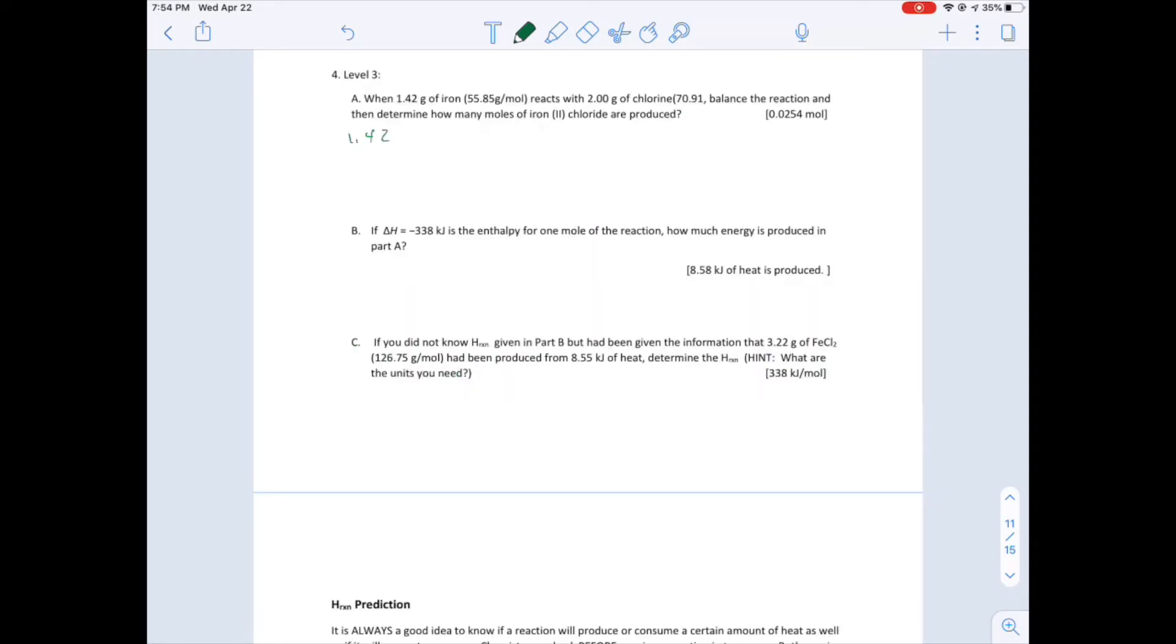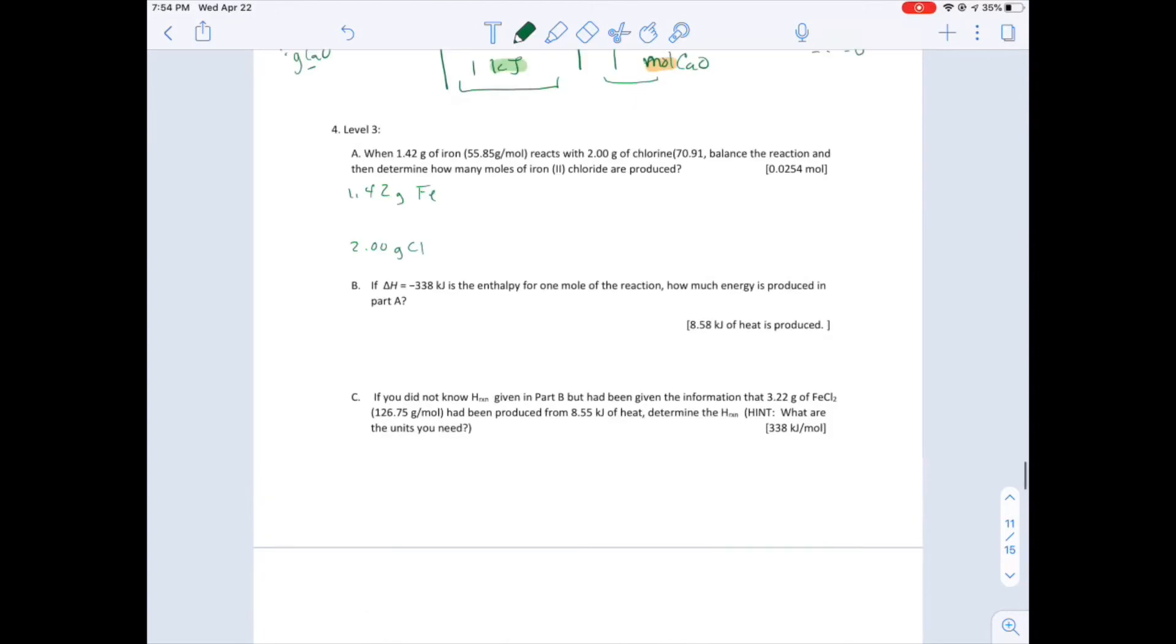1.42 grams of iron. So it might be helpful for this problem to write out the reaction. That's supposed to be grams per mole. Balance your reaction and determine how many moles of iron 2 chloride. That's why I knew that I only needed two chlorines. Iron 2 chloride are produced. You'll notice that I have a number here, 1.42, and I have a number here. This bringing flashbacks of Chapter 7. That's Cl2, by the way, because it's diatomic.